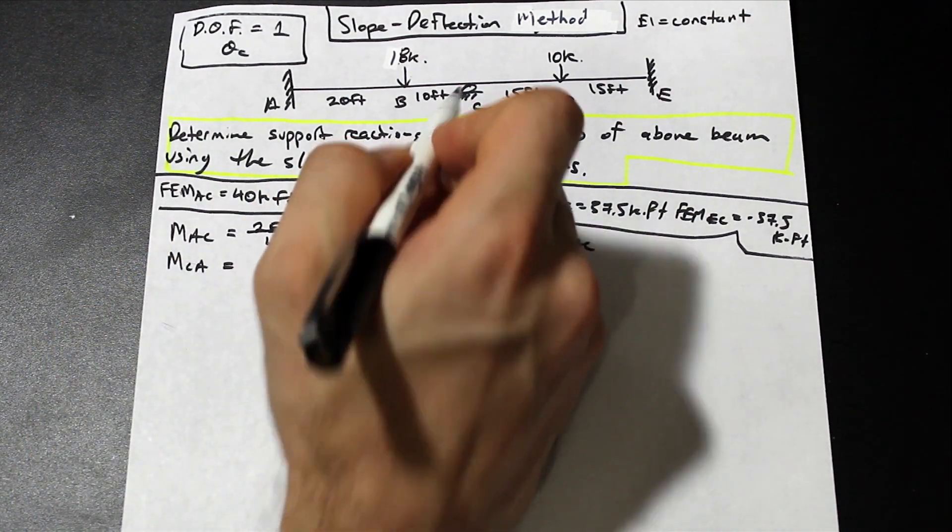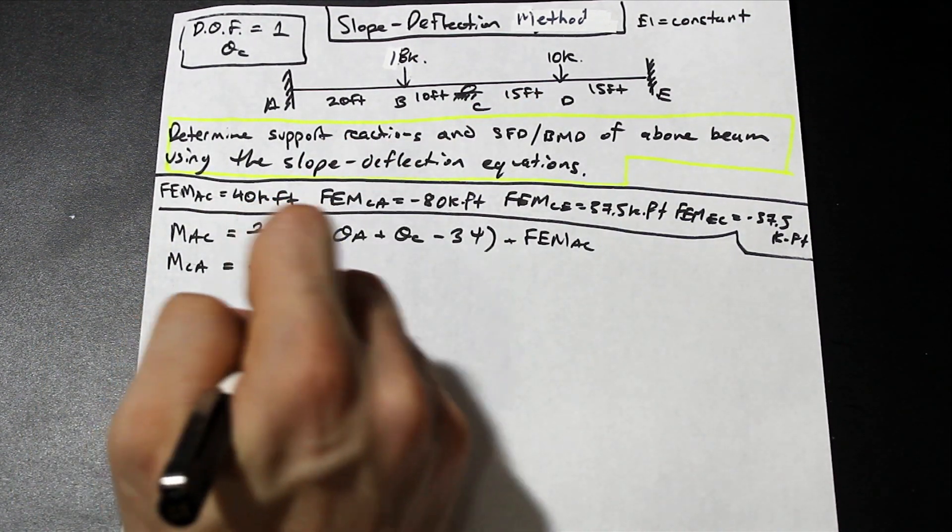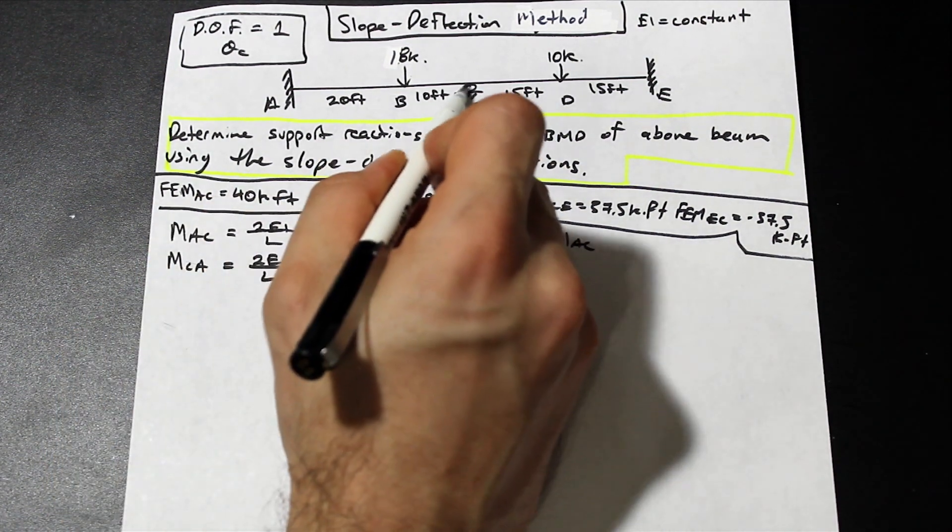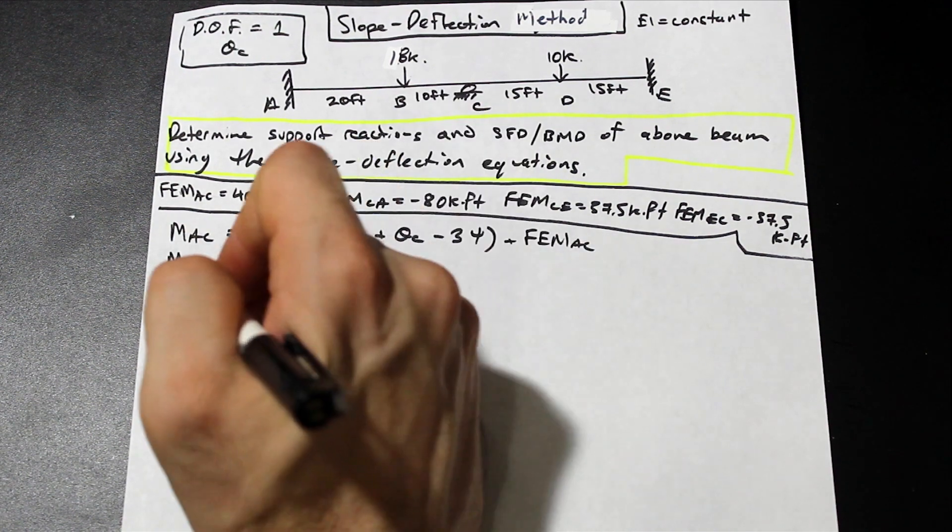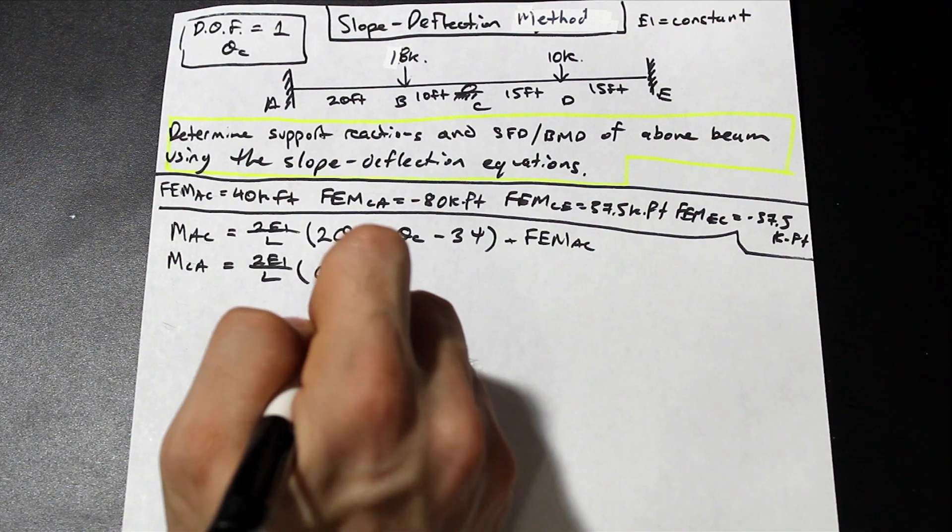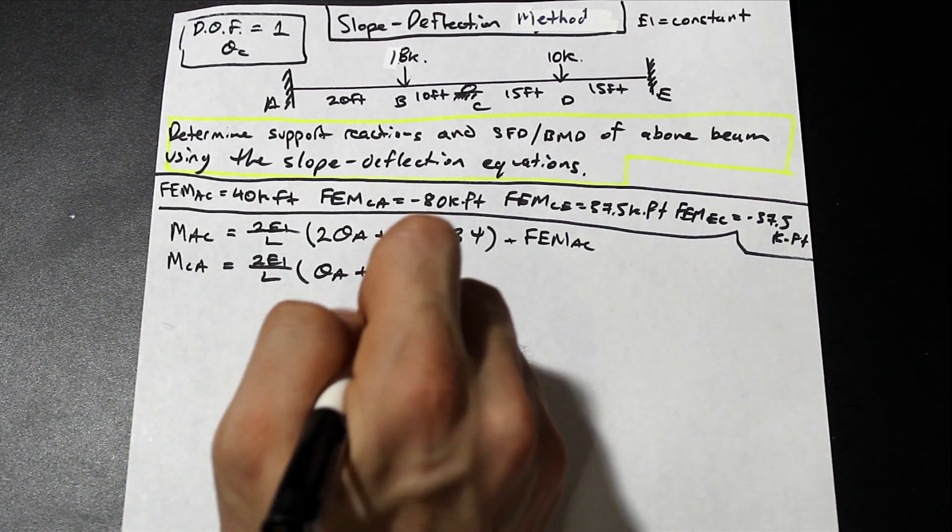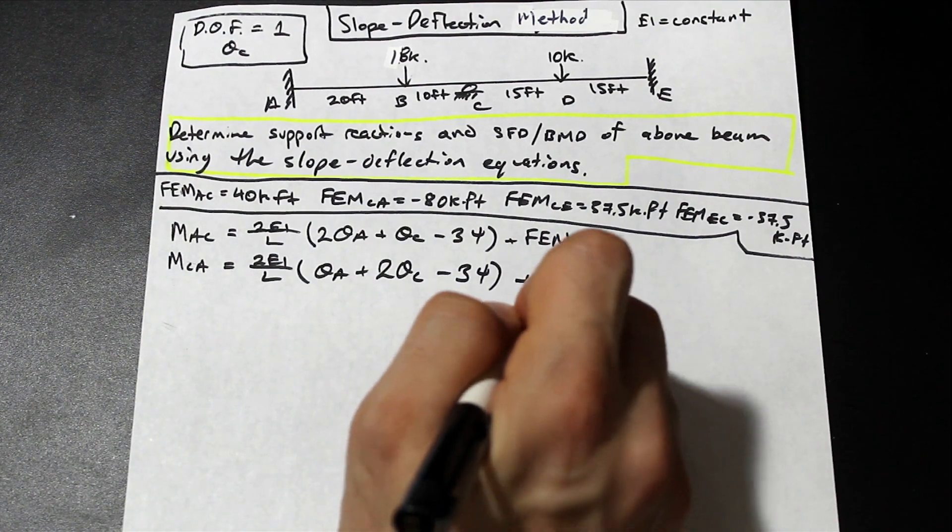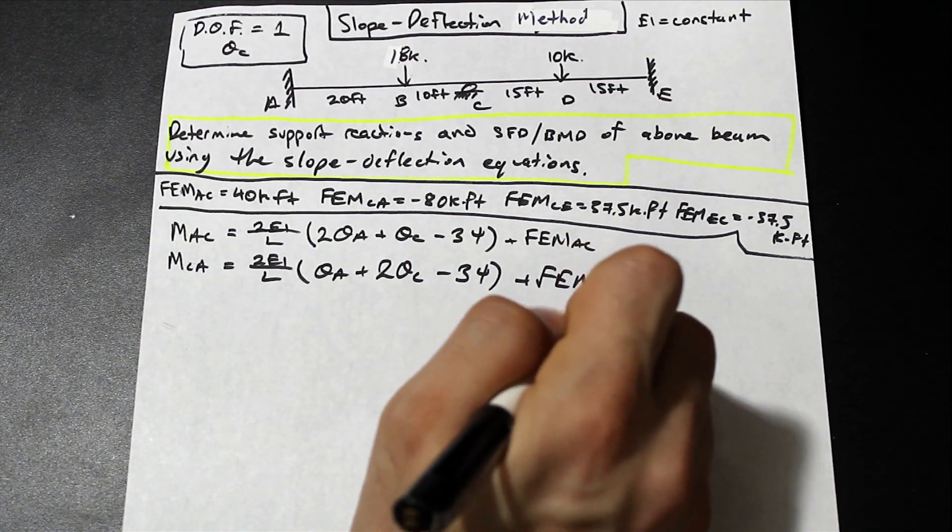And we did that in the other question, so we have that value there. Let's go to CA, so we're at C. 2EI over L doesn't change. And as we said before, when we're at the point in which we're evaluating the moment, so whatever the first subscript is, that is where the 2 goes in front of the θ. So this is just going to be θA, plus 2θC, minus 3ψ, plus FEMCA.